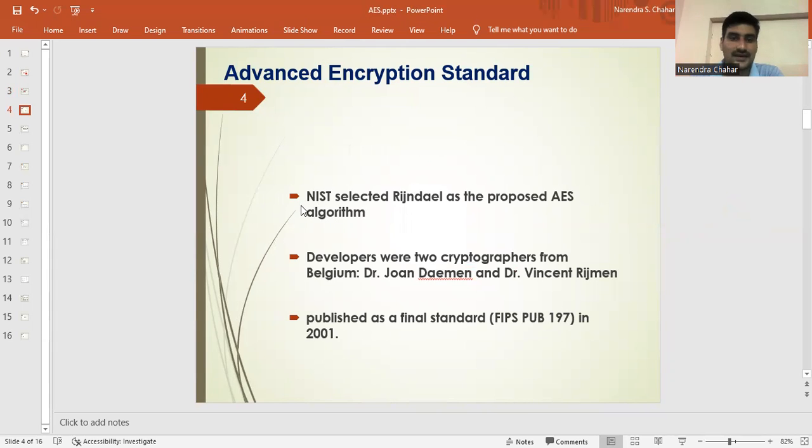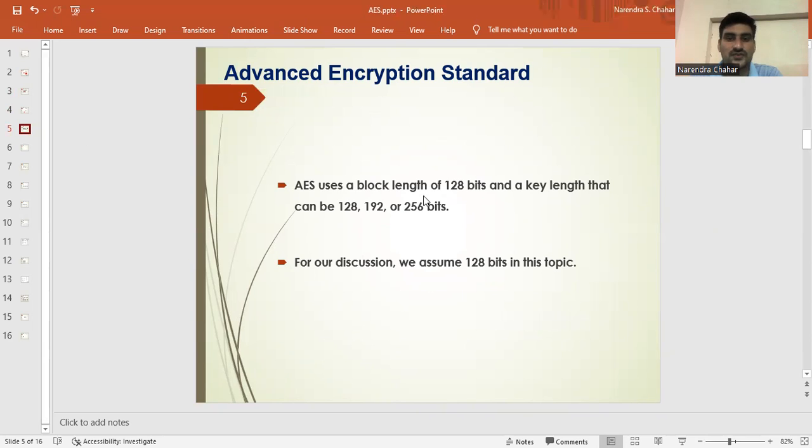NIST selected a proposed AES algorithm which was developed by Dr. John and Dr. Vincent. It was finally published as FIPS publication 197-2001. This is when the advanced encryption standard was published. The block size is 128 bits and key length 128, 192 and 256. For the description, we are taking 128 bits only.